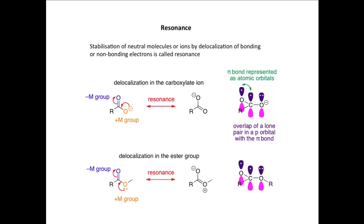For an ester, we have a similar situation. We can delocalize one of the lone pairs on the oxygen atom in the ester onto the other oxygen atom, again using two curly arrows to show the movement of electrons from the electron-donating oxygen, the plus-M group, to the electron-withdrawing oxygen, the minus-M group. Here is the alternative resonance form of the ester, connected again with a straight double-headed arrow. The orbital picture is similar, with a p orbital on the oxygen containing the lone pair interacting with the pi bond represented as atomic orbitals.